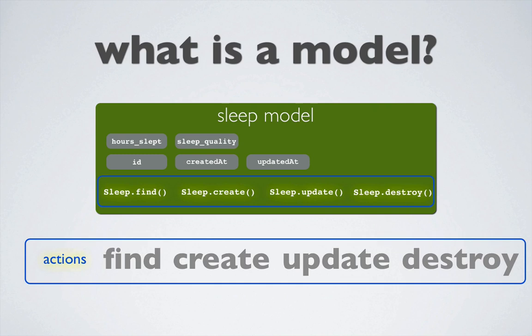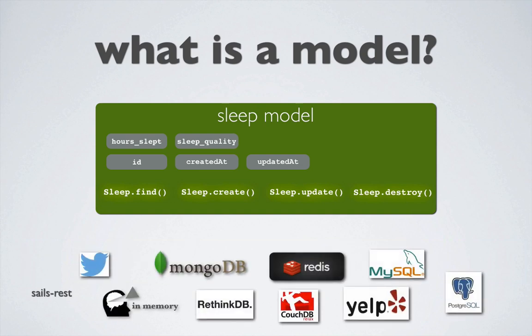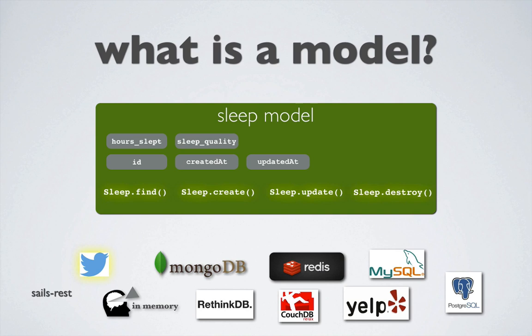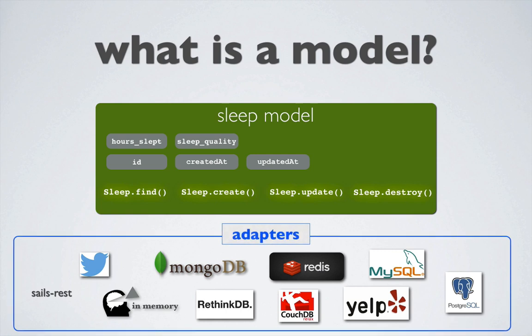As you'll see when building the API in the next episode, the actions combine code necessary to complete the request, including calls to the model methods. Having separation between the model and where your data resides is important because you might want to store your model in an SQL database at first but later move it to a Mongo database, or you might be using data from some other API. That's really the power of a framework like Sails — we can learn one way of finding, creating, updating, and destroying instances of our model, and let Sails worry about how it actually accesses or stores data at the level of a database or other data source. The Sails community provides different adapters like Postgres, SQL, and Mongo from which we can pick and choose where our data ultimately resides.